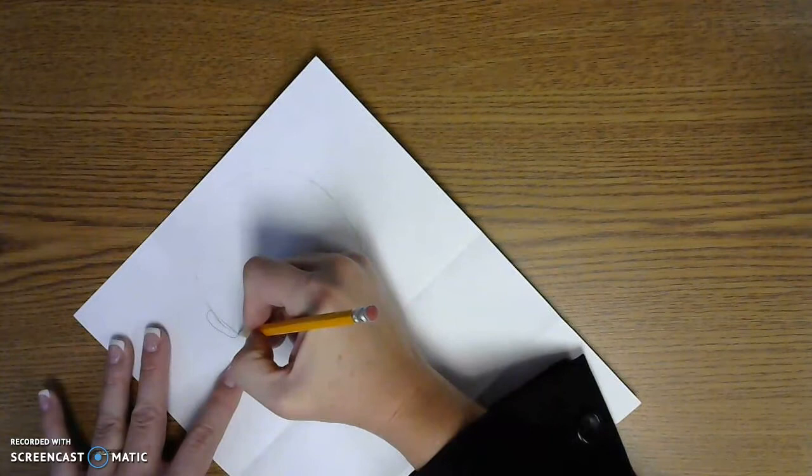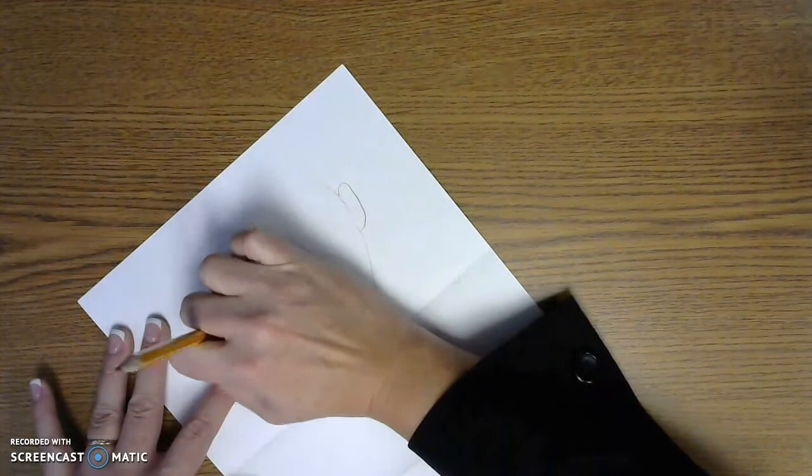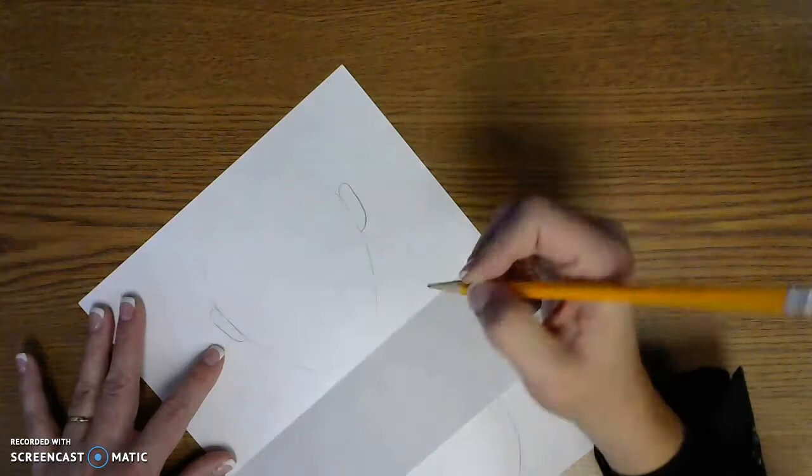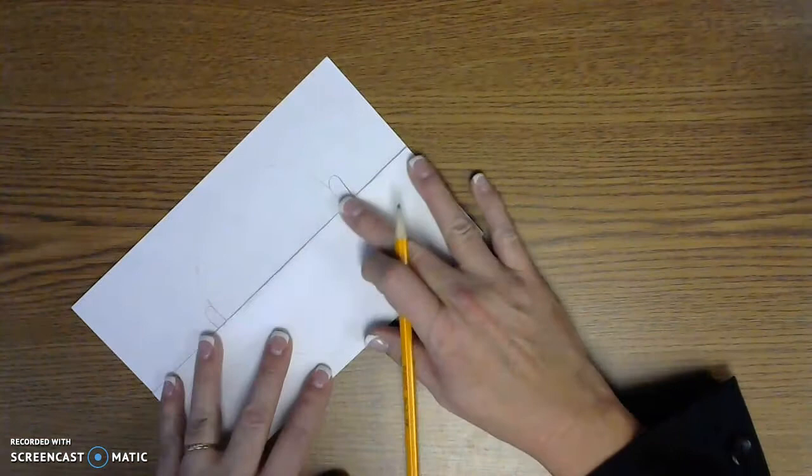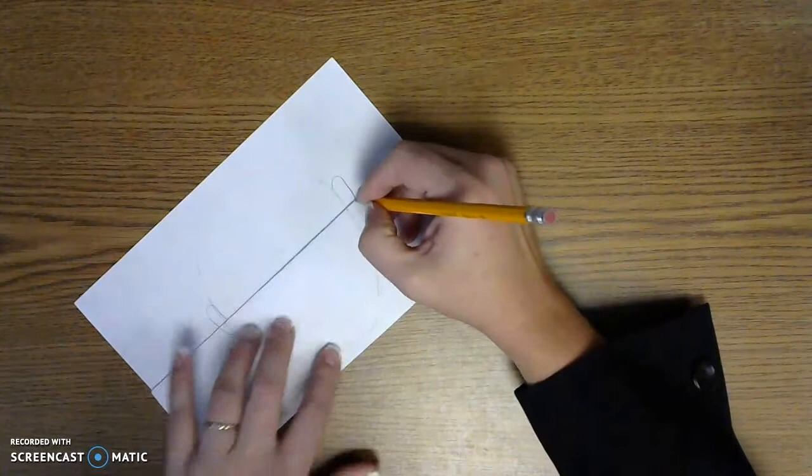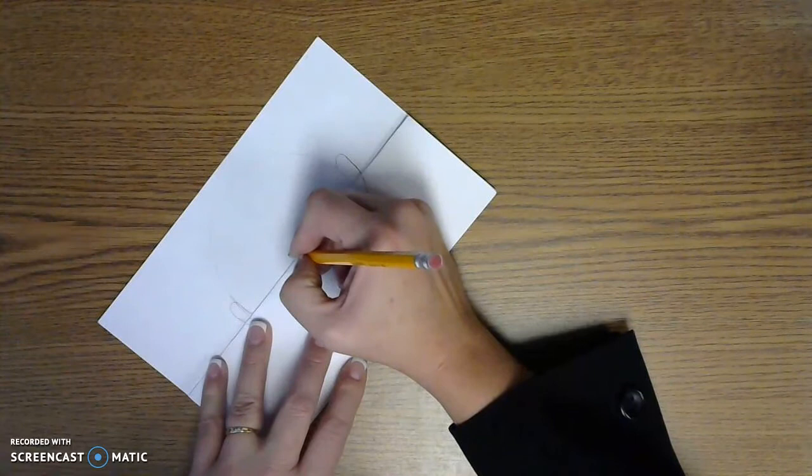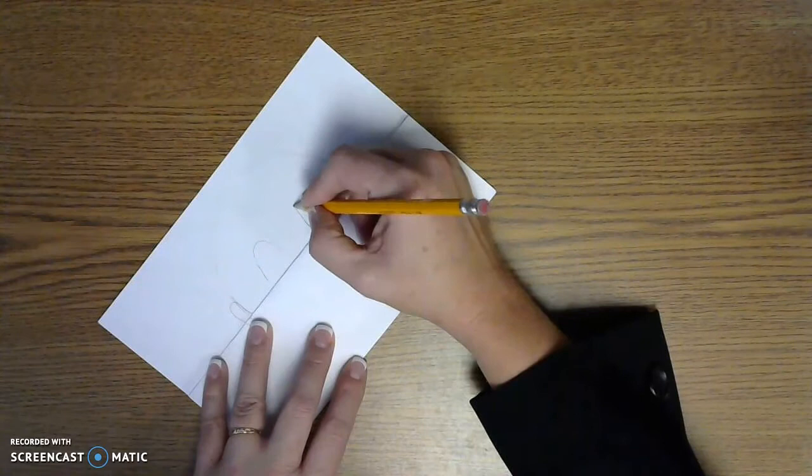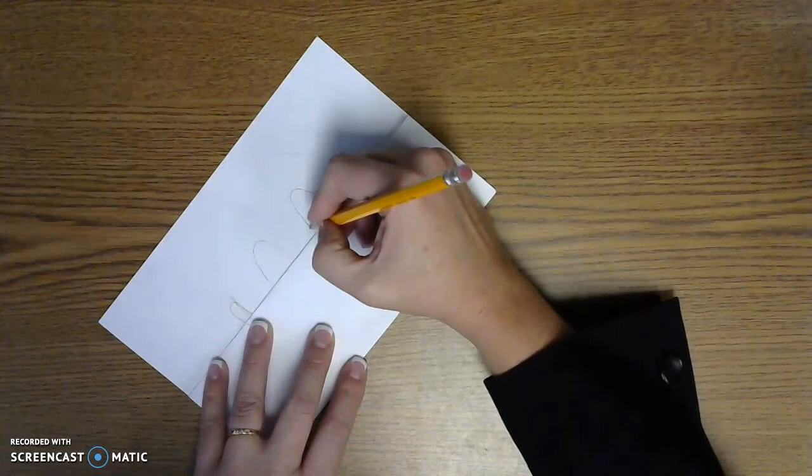So I'm going to draw my ears because you can see my ears even with my mask on. And I want to make sure that my eyes are going to show. So I fold it up. I continue my ears because they're going to show.